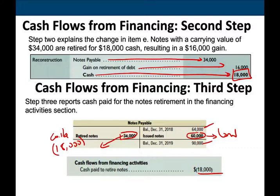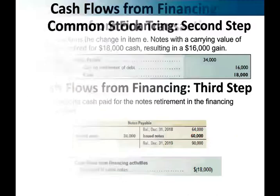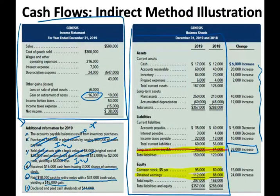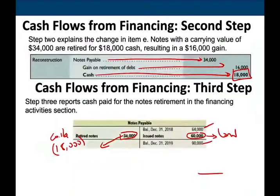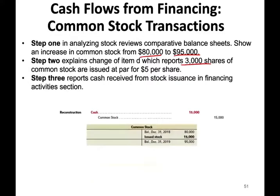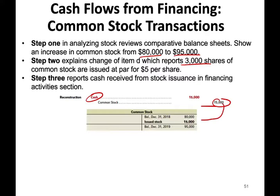We need to analyze the other financing accounts. Common stock went from $80,000 to $95,000, an increase of $15,000. That's easy — because letter D says we received $15,000 cash from issuing 3,000 shares of stock. All the stock we issued raised cash. So in the T-account: beginning $80,000, ending $95,000, we debited cash and credited common stock $15,000. Simply put, cash received from common stock: $15,000.